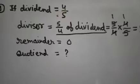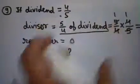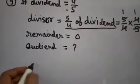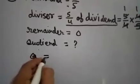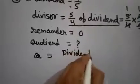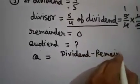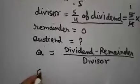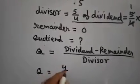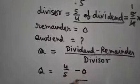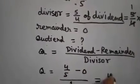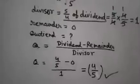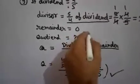Sometimes the wording changes but you can check the sentence and find the correct answer for the divisor. Remainder is zero. Find the quotient — remember that quotient = (dividend − remainder) ÷ divisor. So the correct quotient is (4/5 − 0) ÷ 1 = 4/5. So four upon five will be the correct option.